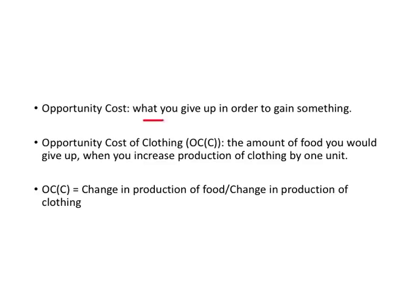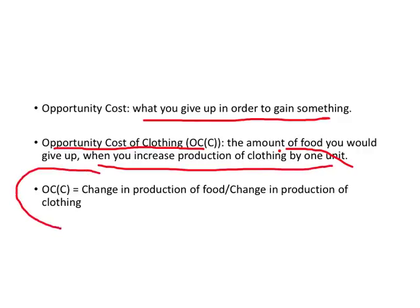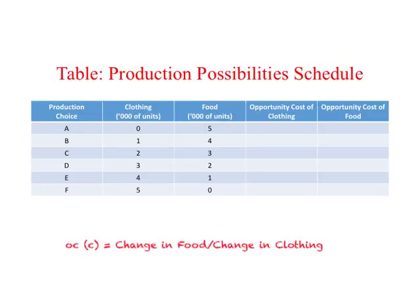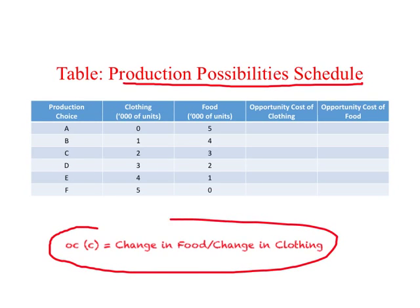Opportunity Cost is what you give up in order to gain something. More specifically, the Opportunity Cost of Clothing is the amount of food you would give up when you increase production of clothing by one unit. In ratio terms, Opportunity Cost of Clothing (OCC) is measured as change in production of food divided by change in production of clothing. We use the production possibility schedule from the previous lecture to calculate this, working out the difference between two consecutive numbers.